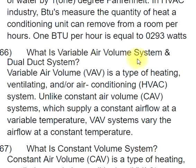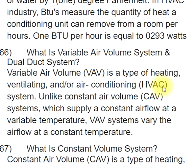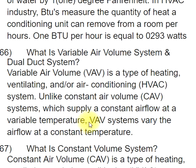Q66: What is variable air volume system and dual duct system? Variable air volume (VAV) is a type of HVAC system. Unlike constant air volume (CAV) systems, which supply a constant airflow at a variable temperature, VAV systems vary the airflow at a constant temperature.